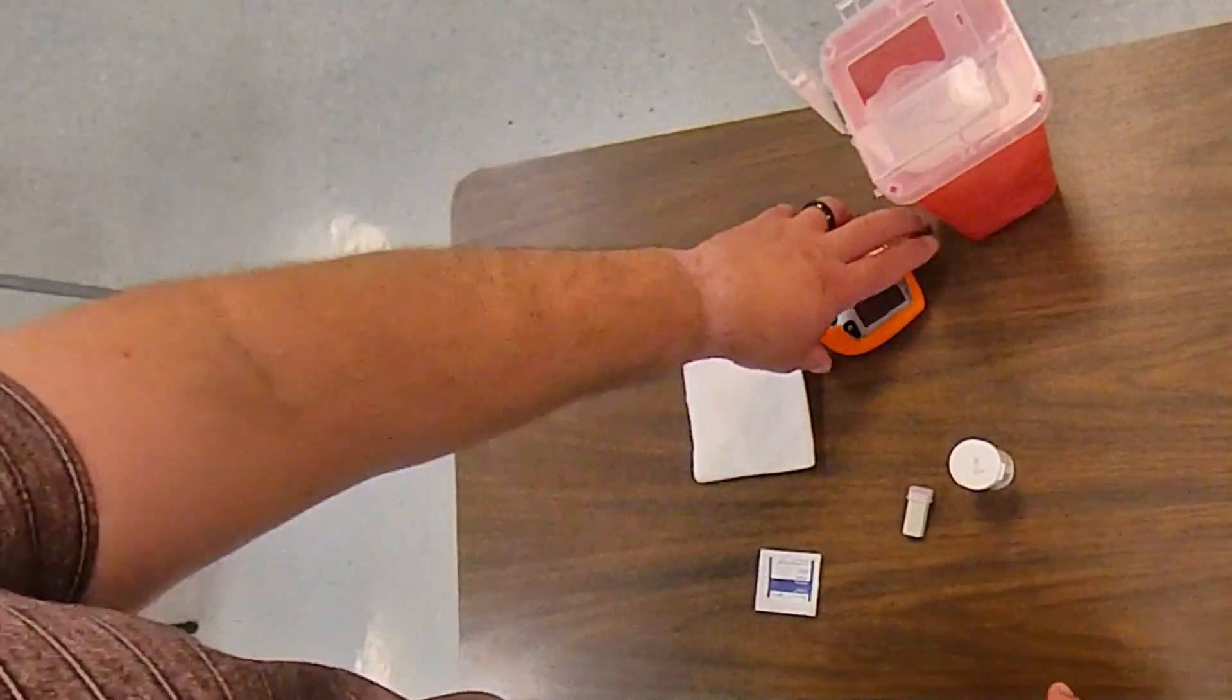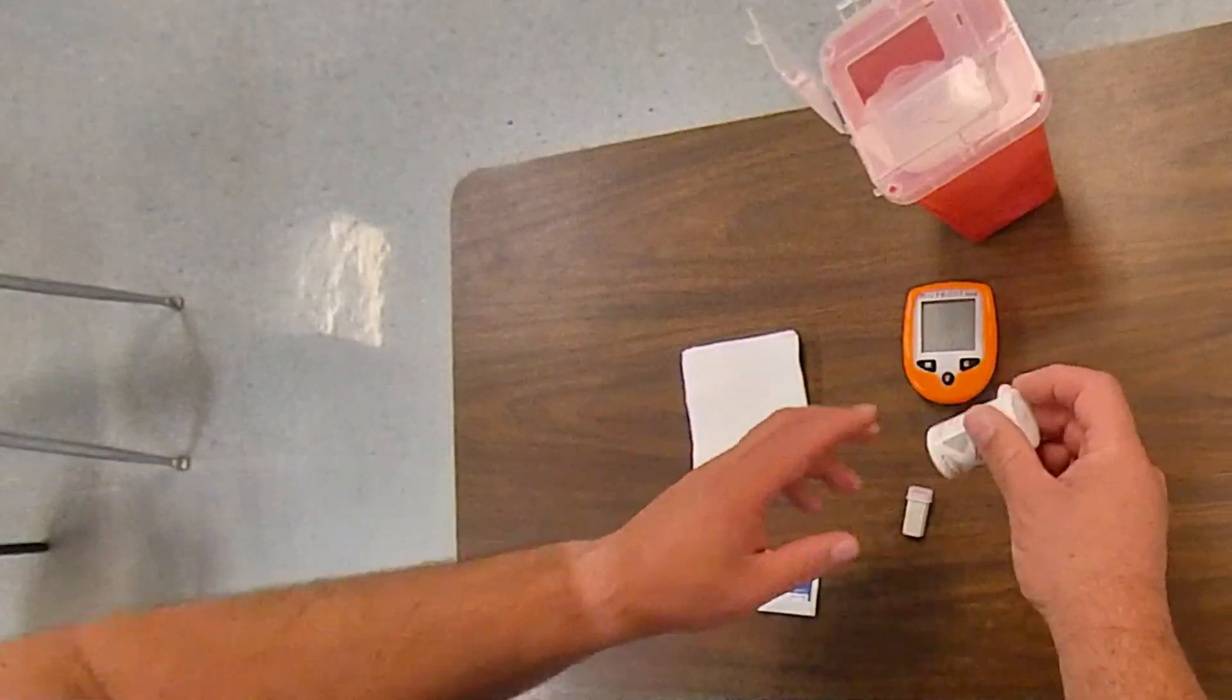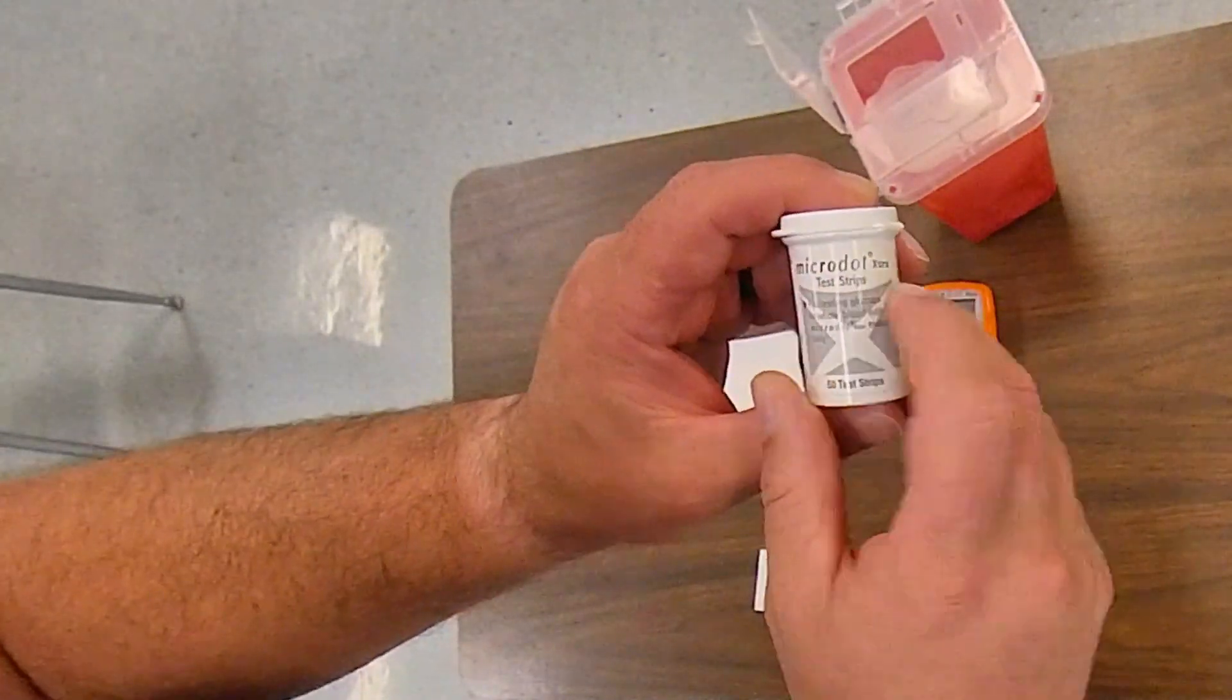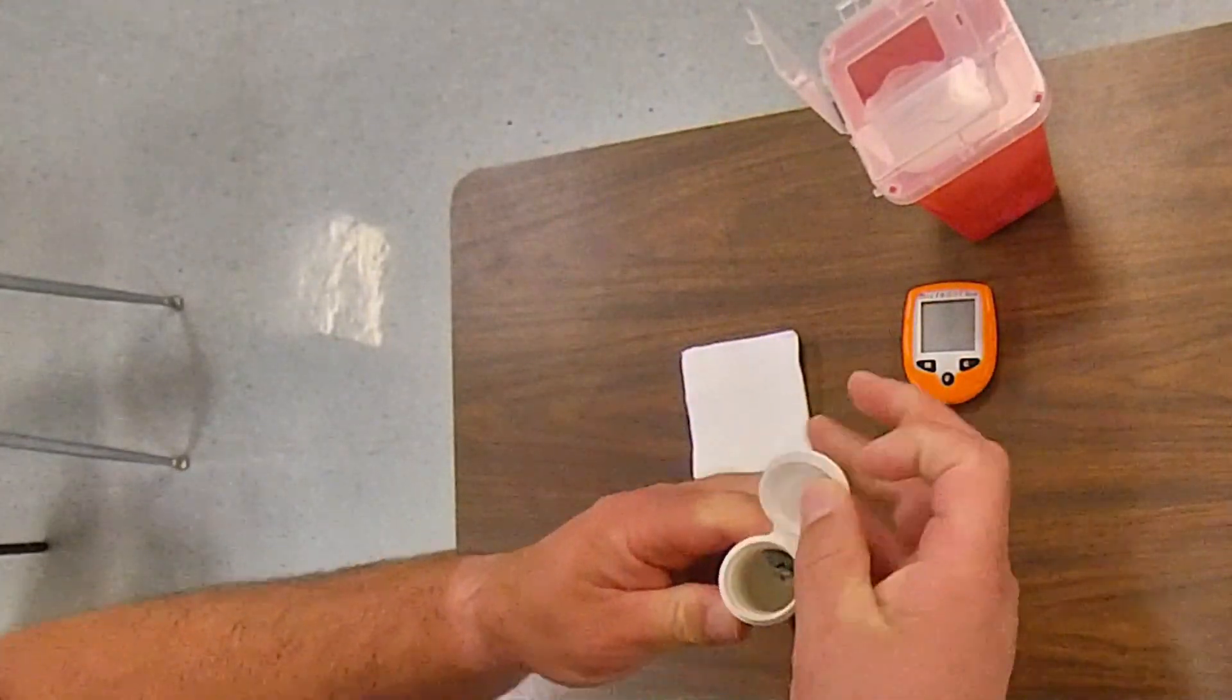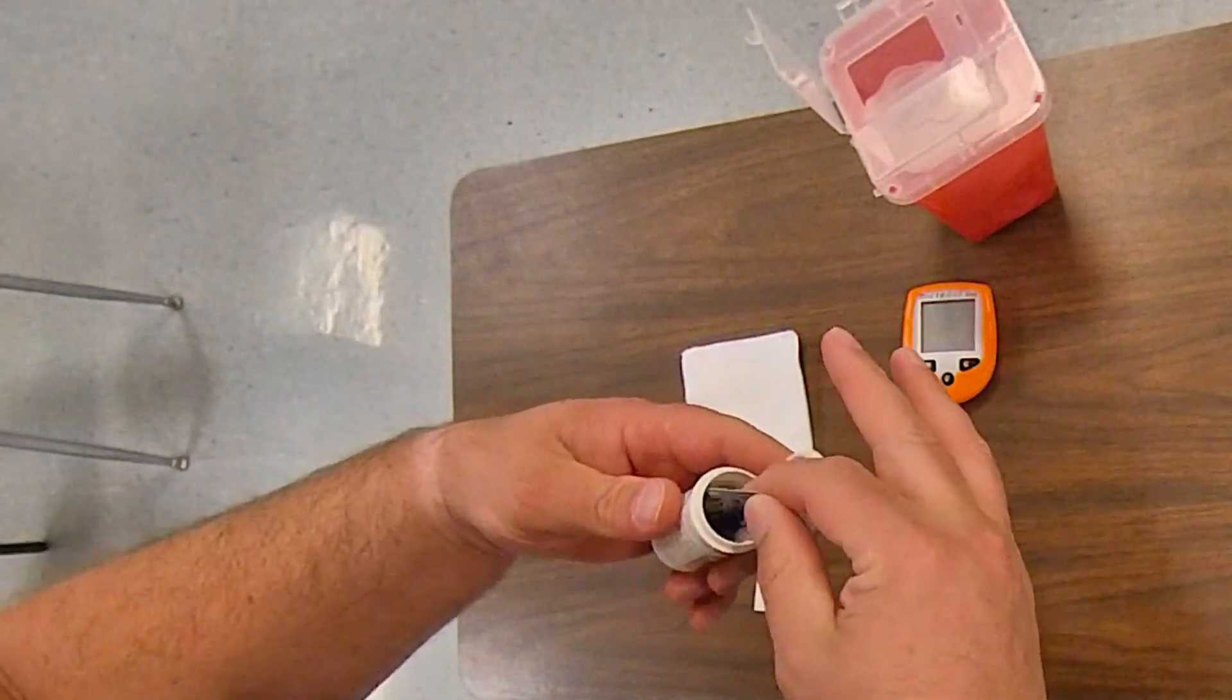When we are checking it, we need to assemble our equipment. So I have my glucometer and I have strips. Now these strips need to be what matches the glucometer. So I usually get a strip out, have it available.